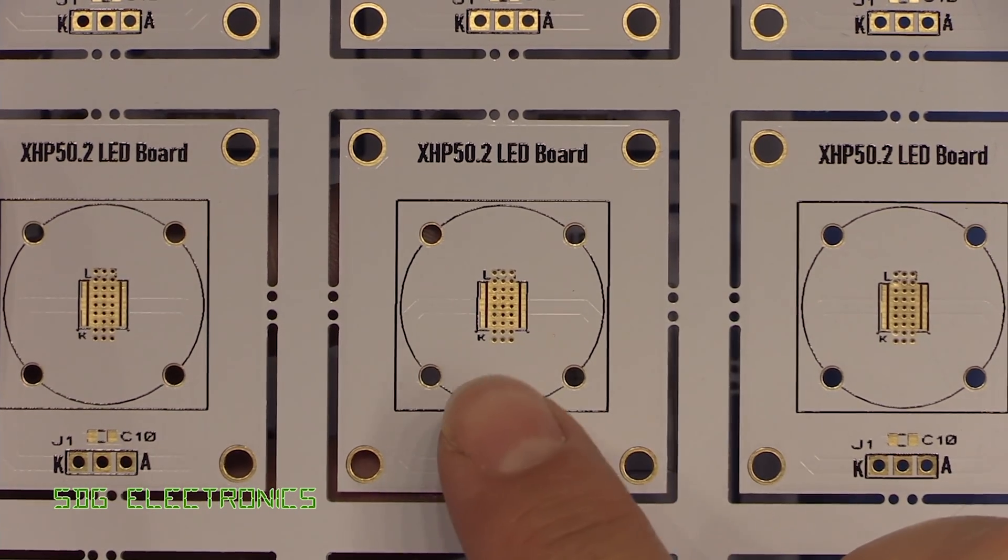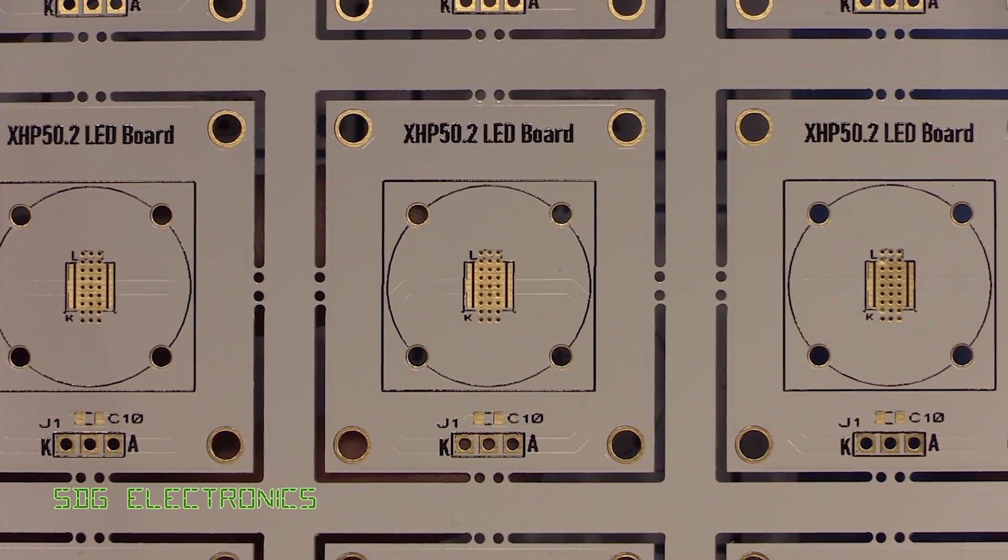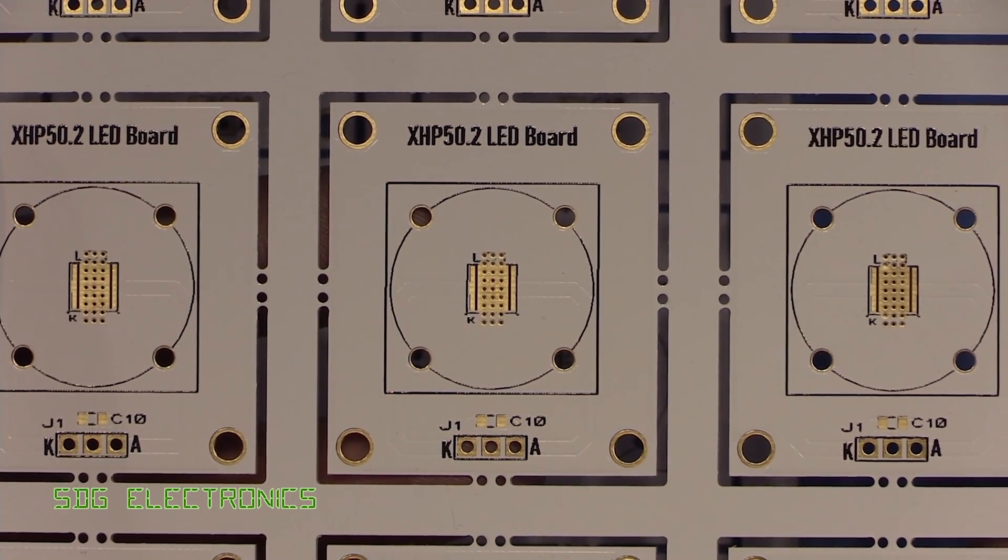On this side is where we've got our LED. In the center there, we've got a little capacitor, and then we've got a header there, which is what we're going to use to connect up to the main PCB.